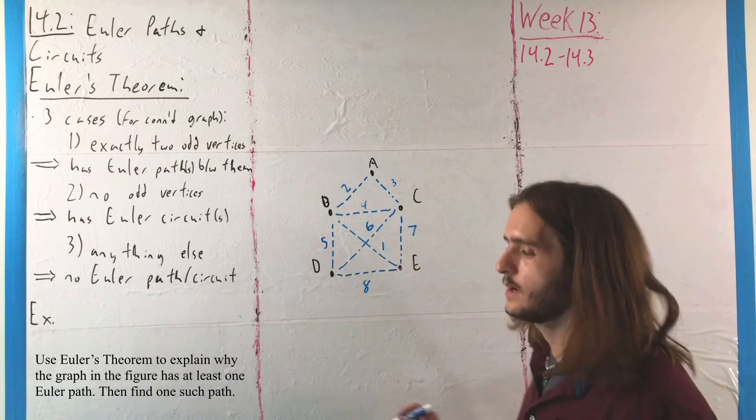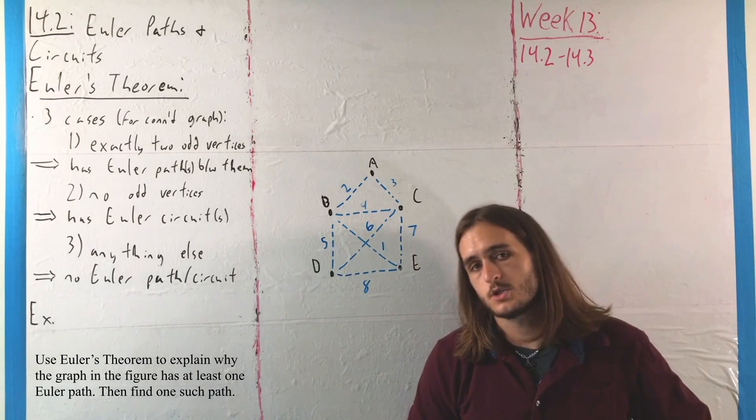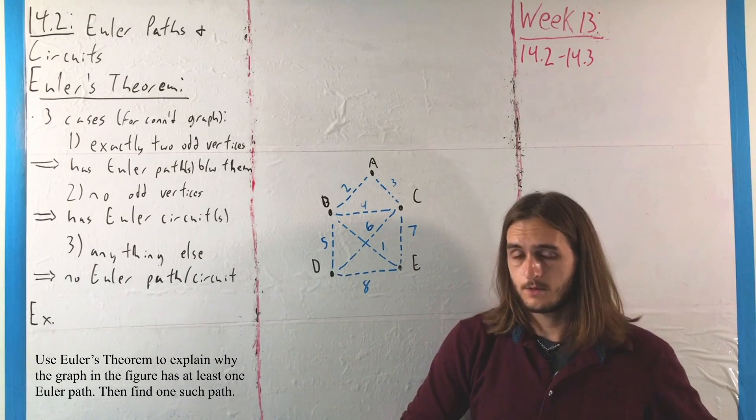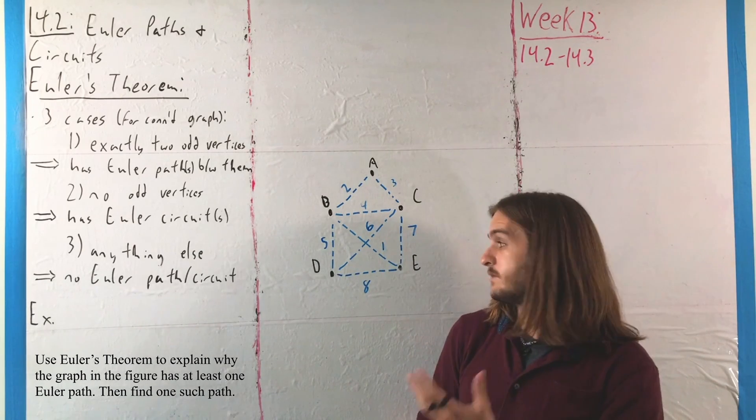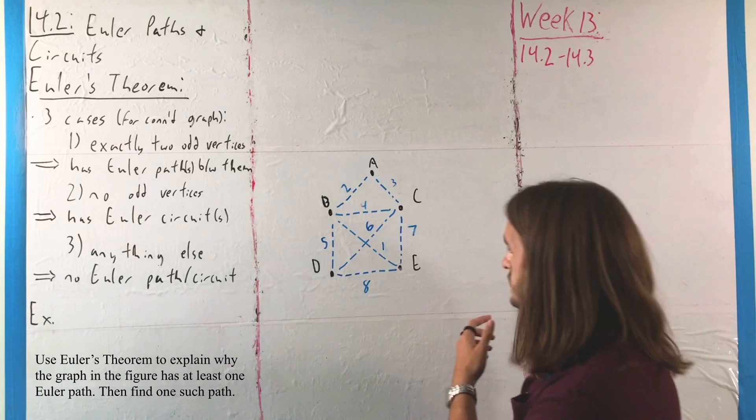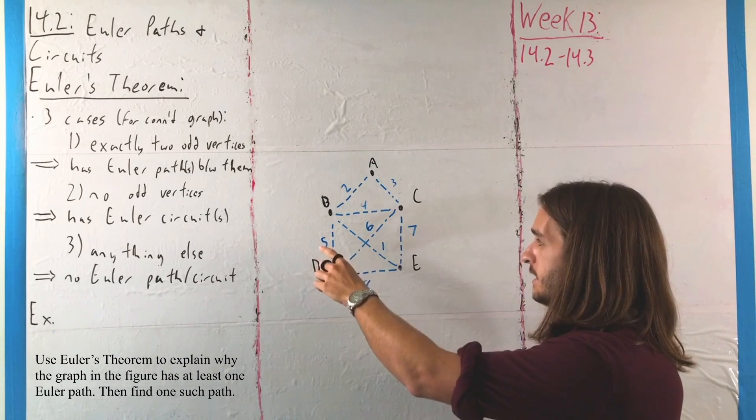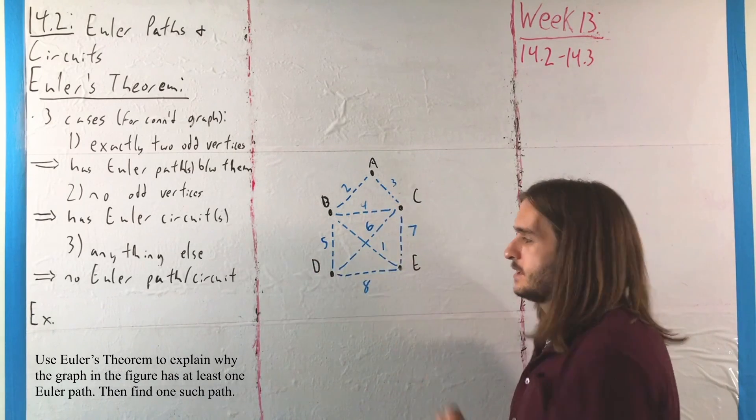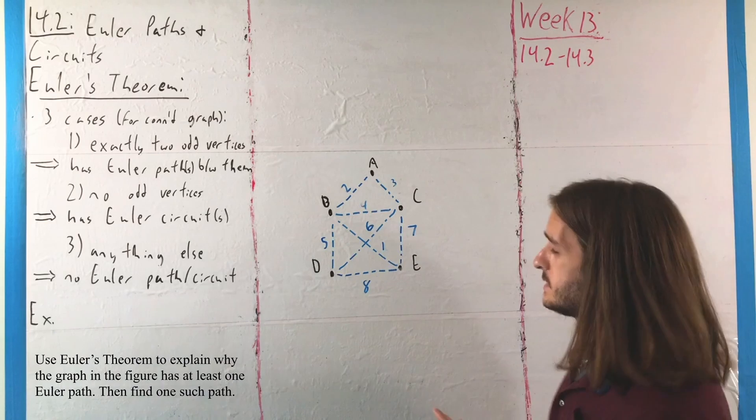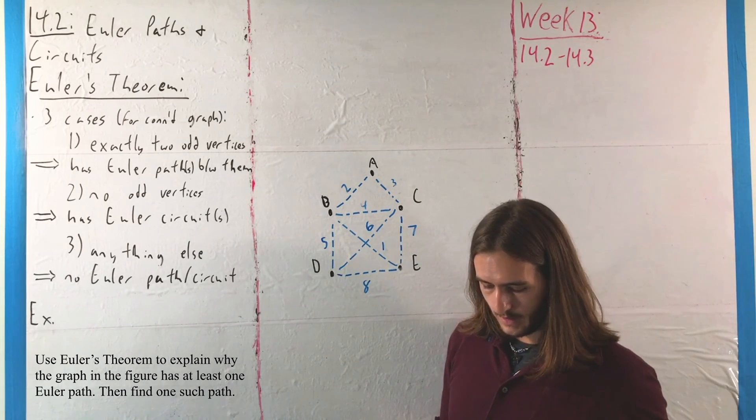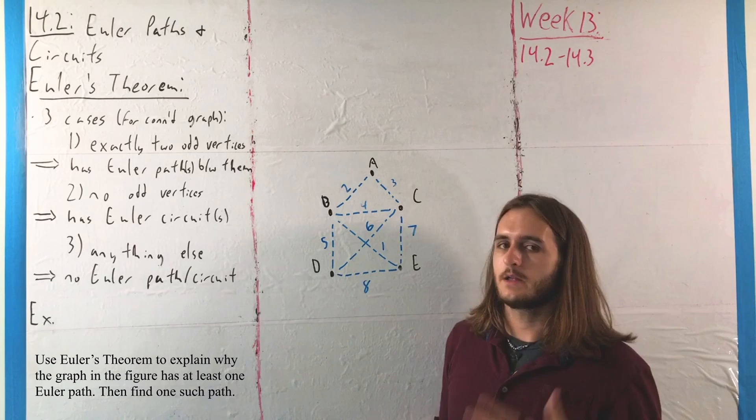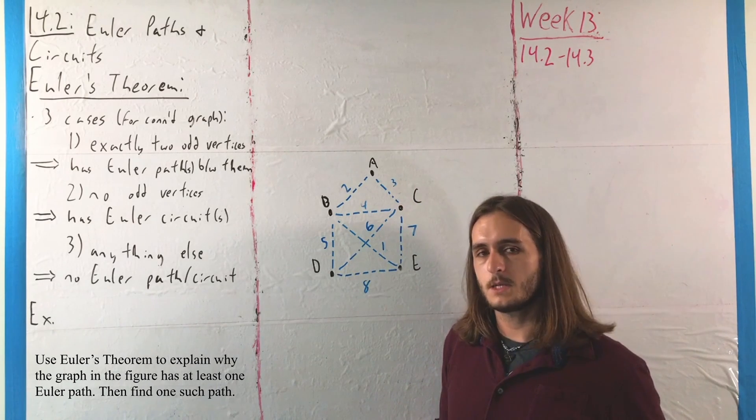And then finally E back to D for our 8th and final edge on our path through this graph, where we have touched every edge exactly one time. But notice we've gone through a few vertices more than once, including E we started at and then passed through another time, as well as D we ended at but had to go through once along the way as well.